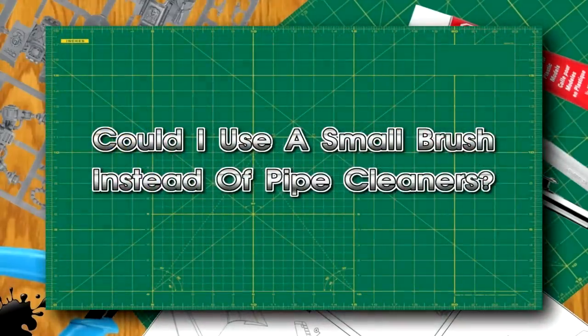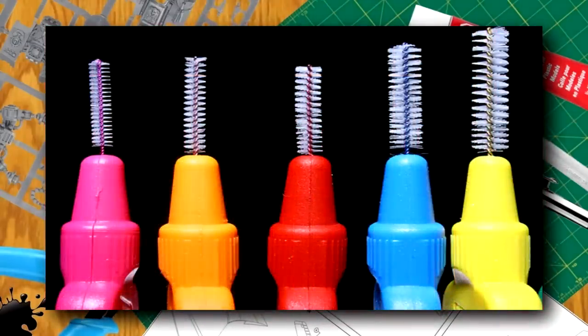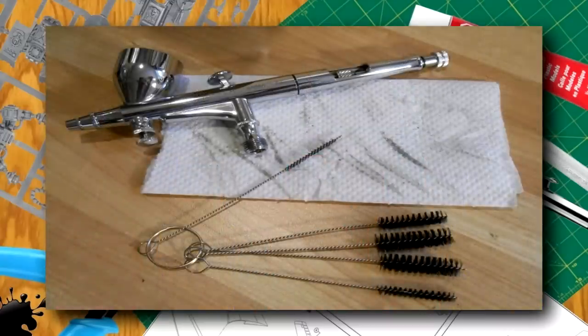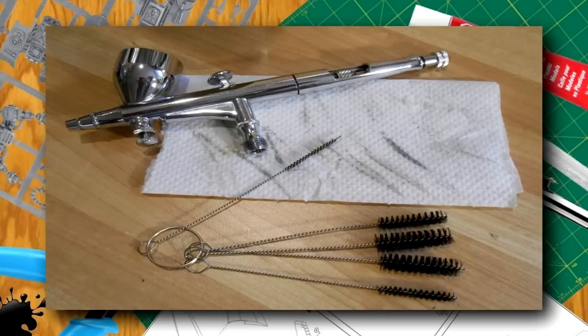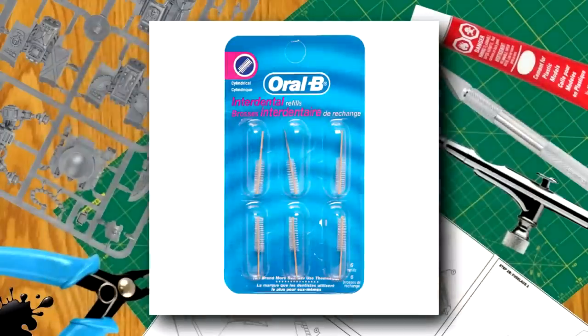Could I use a small brush instead of pipe cleaners? Yes! In fact, that's a great thing to do. You can use an interdental brush in many of the places that you regularly use pipe cleaners. However, there are still times when you'll need a pipe cleaner, so you can't eliminate the need for them entirely. Incidentally, I know that Oral-B interdental brushes don't melt in lacquer thinner.